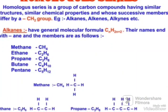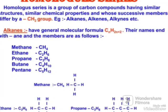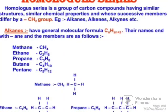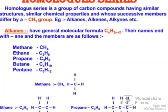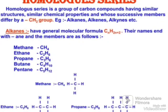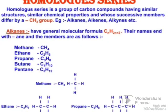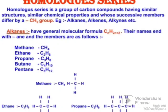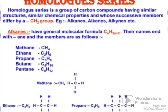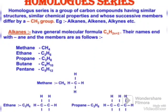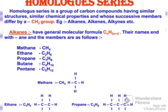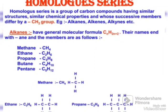When it comes to homologous series, it is a group of carbon compounds having similar structures, similar chemical properties, and whose successive members differ by a CH2 group. Examples include alkanes, alkenes, and alkynes. For alkanes, you can take methane, ethane, propane, and so on.